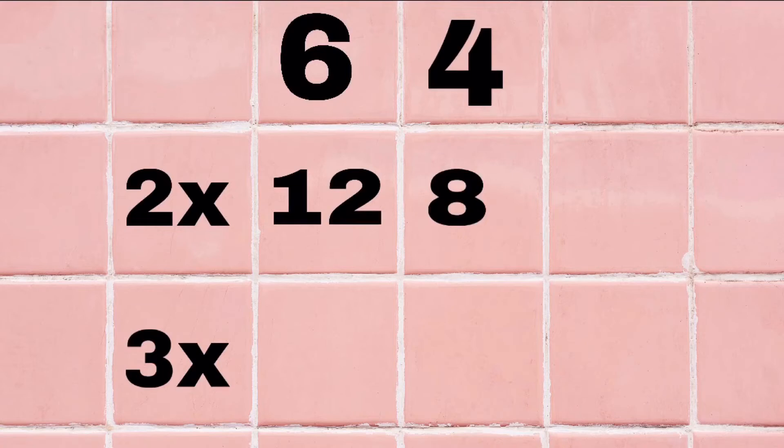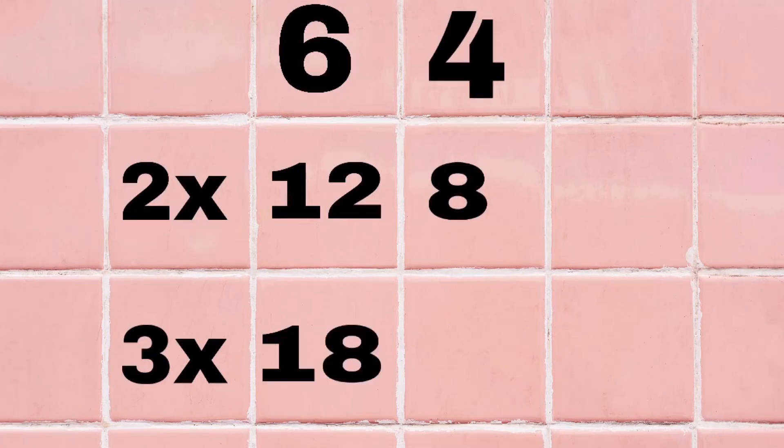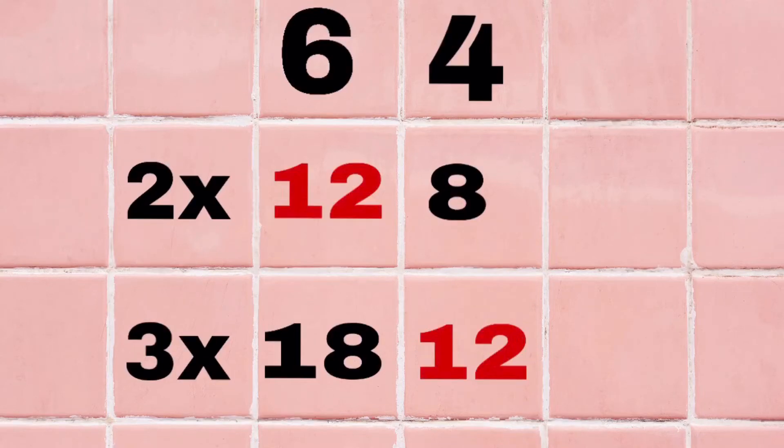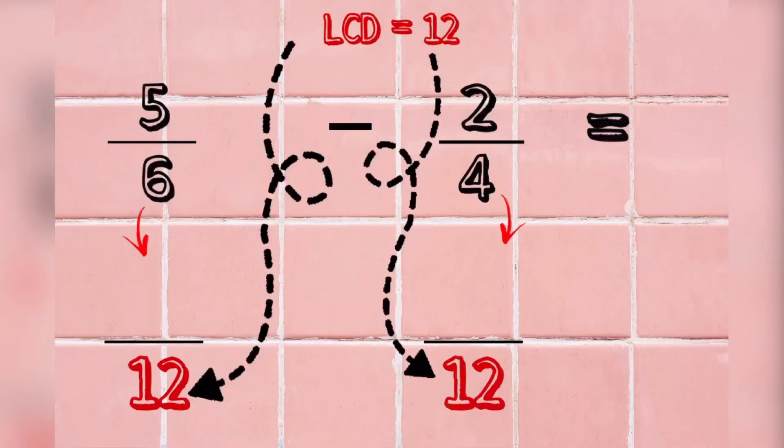2 times 6 is 12. 2 times 4 is 8. 3 times 6 is 18. 3 times 4 is 12. Then, we see that 12 is the LCD. So, we can change the denominators into 12.